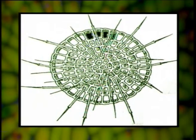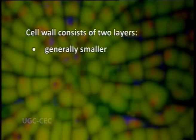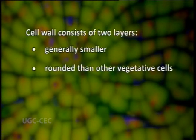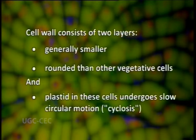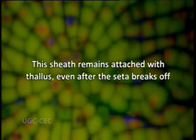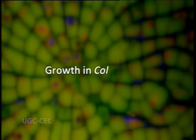Under certain conditions, especially when available nitrogen is in short supply, certain Coleochaete cells produce long colorless projections with a sheathed base called sheathed setae. The setae-bearing cells are generally smaller and rounded than other vegetative cells, and the plastids in these cells undergo a slow circular motion called cyclosis. This sheath remains attached to the thallus even after the setae breaks off. The motile bodies are biflagellate and lack eyespots.